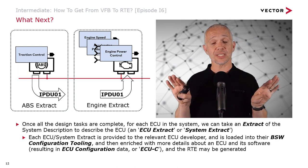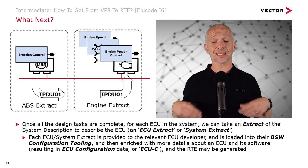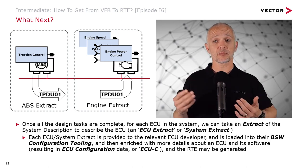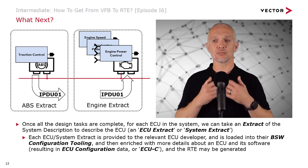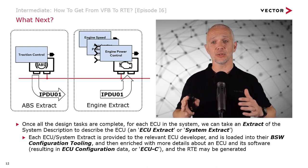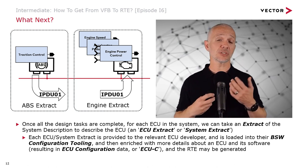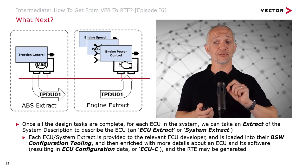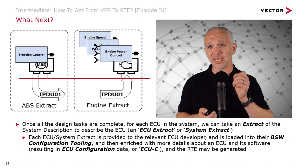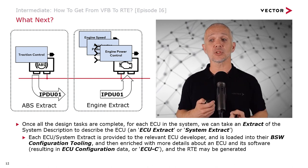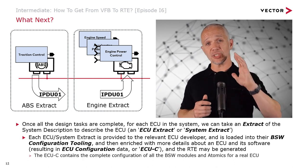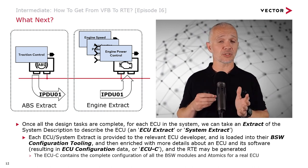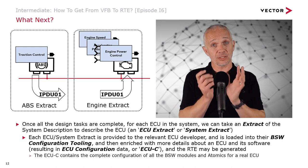We give those extracts to the relevant ECU developers, and they load them into their basic software configuration tooling. Then they enrich that with more details about an ECU and its software. The result of this process is ECU configuration data, or ECUC for short. At this point, the RTE is able to be generated. The ECUC contains the complete configuration of all the basic software modules and atomics for a real ECU.